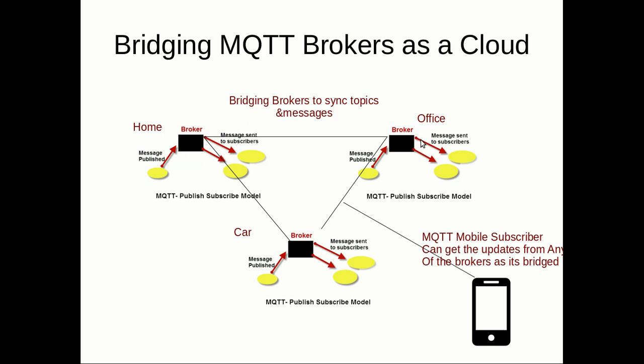Similarly you have a cloud in the office which handles all the temperature from various places in the office, and inside the car you have temperature and more information about the car. At the end of the day you have a mobile phone which acts as a subscriber. You can bridge these brokers together so that, say, a car's lock status can be available in the office broker, so when you connect to the office broker while you're in the office, your mobile phone can get the car door lock status from the office broker. The bridging works like a normal client which subscribes and publishes all the topics — that's how the messaging and syncing works.